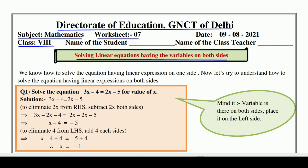We will learn to solve these linear equations in which variables are on both sides. We know how to solve the equation having linear expression on one side. आपको याद है कि last worksheet में हमने ऐसी linear equation को solve करना सीखा था जिसमें linear expression एक ही side पर था — just like 2x plus 7 is equal to 4, तो हमने x की value find की थी.